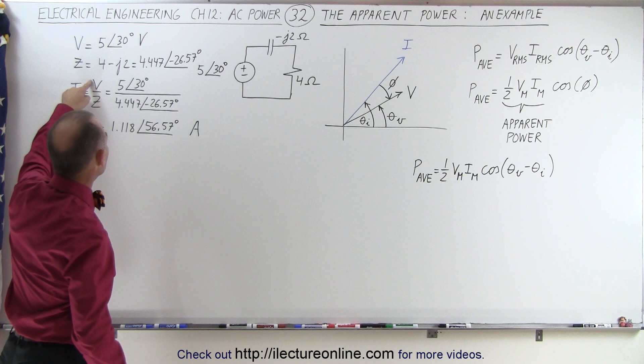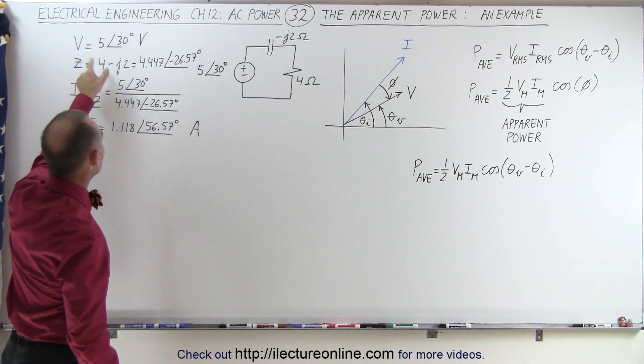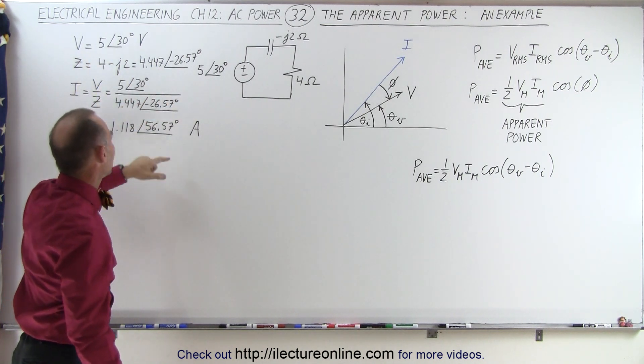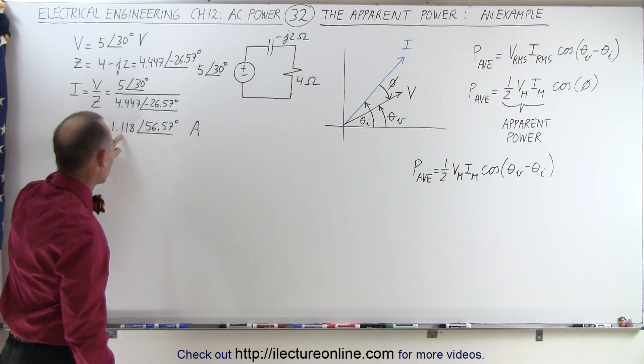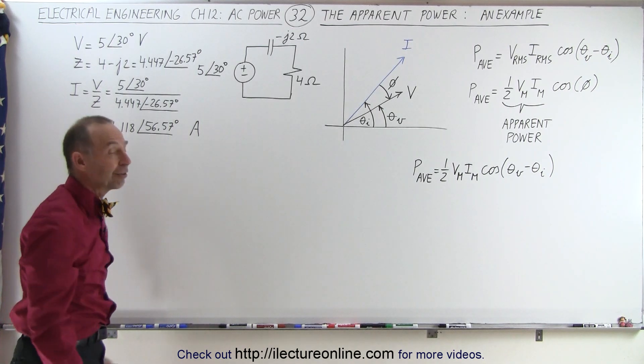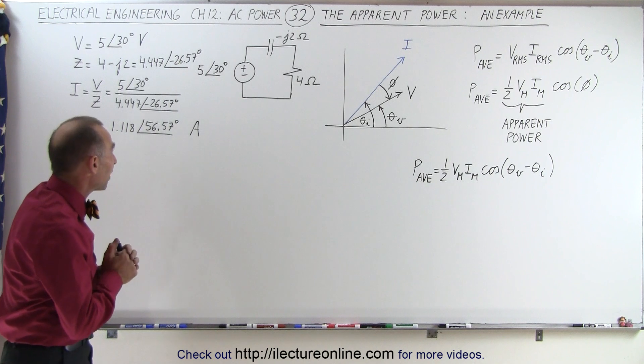To calculate the current, we take the voltage divided by the impedance. So there's the voltage divided by impedance, and that gives us a current with a maximum value of 1.118 amps with a phase angle of 56.57 degrees.